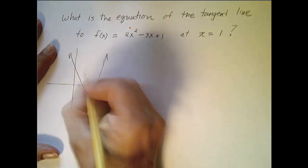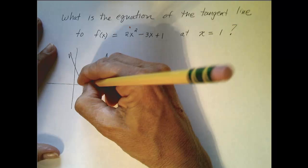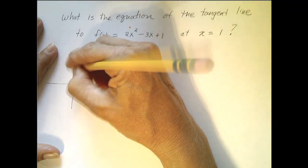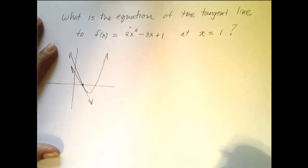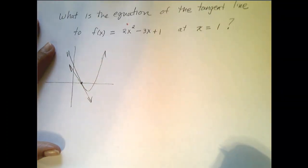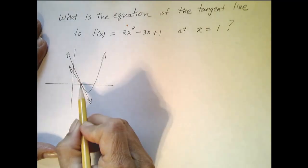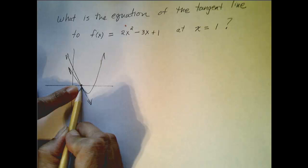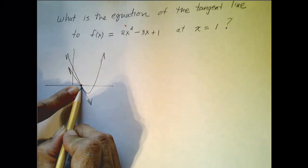At x equals 1, that's there, and the tangent line is going to look roughly like that. If you were a better drawer, it would look better than that. So we know that we can figure out one point on our graph, which looks to be 1, 0.